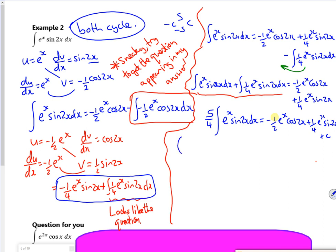So I want to get rid of that 5 over 4, because this bit here, that's my question. So I want the question equal to it. So I'm going to multiply by 4 things.